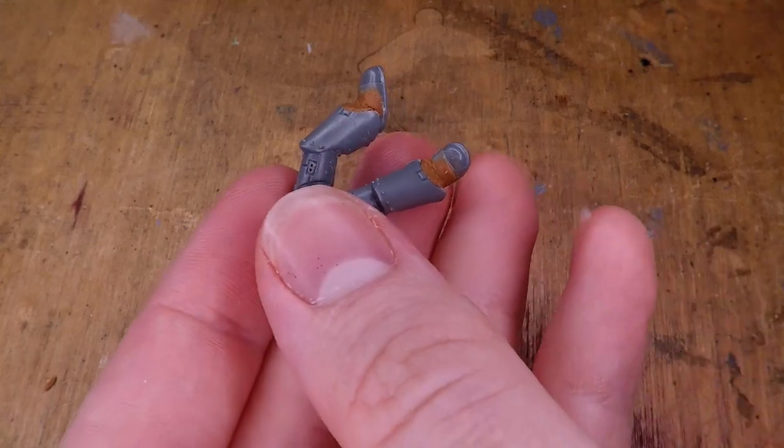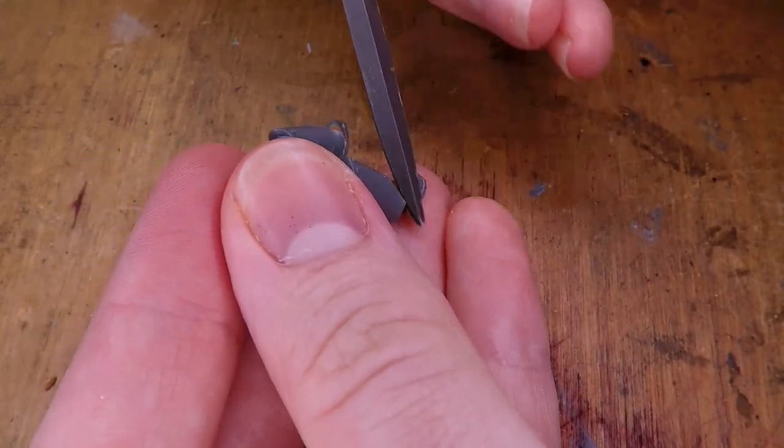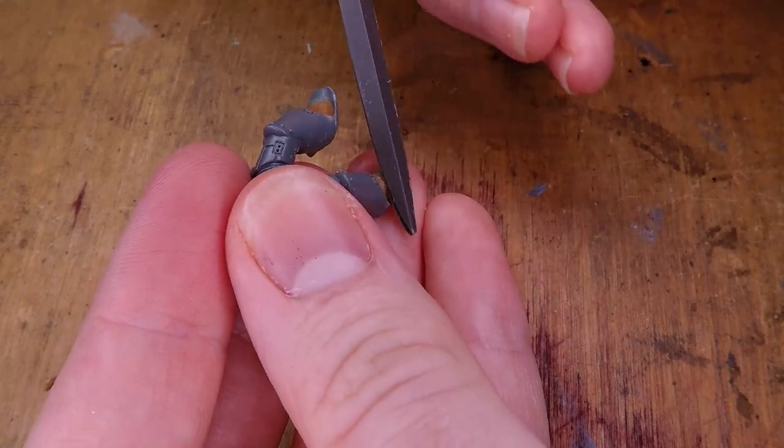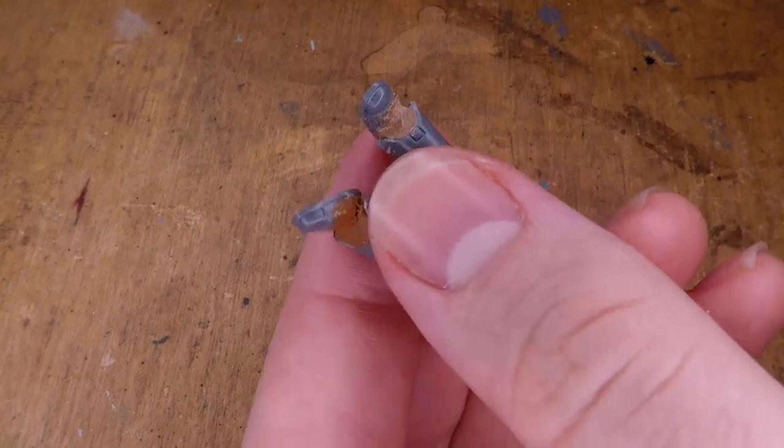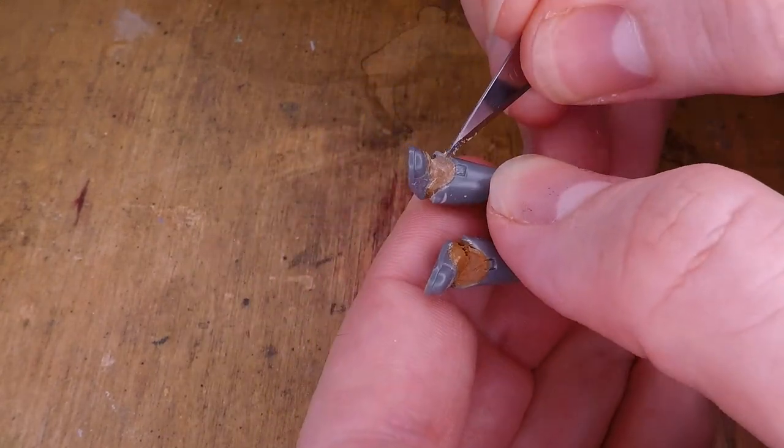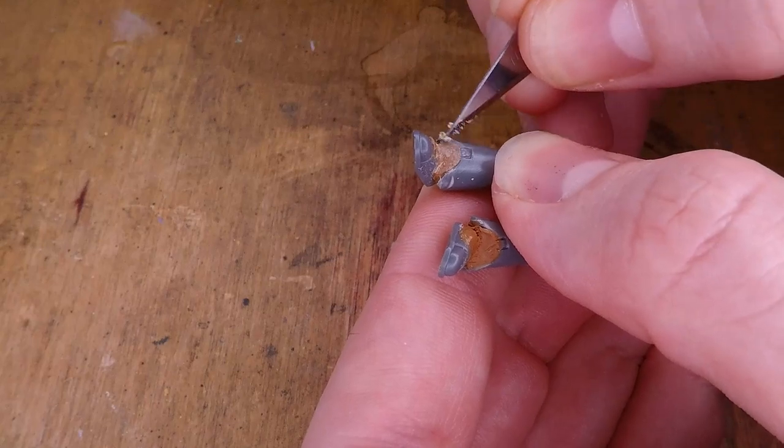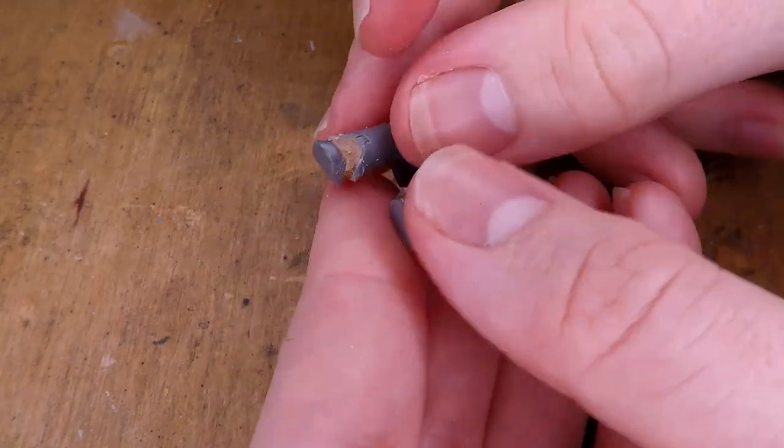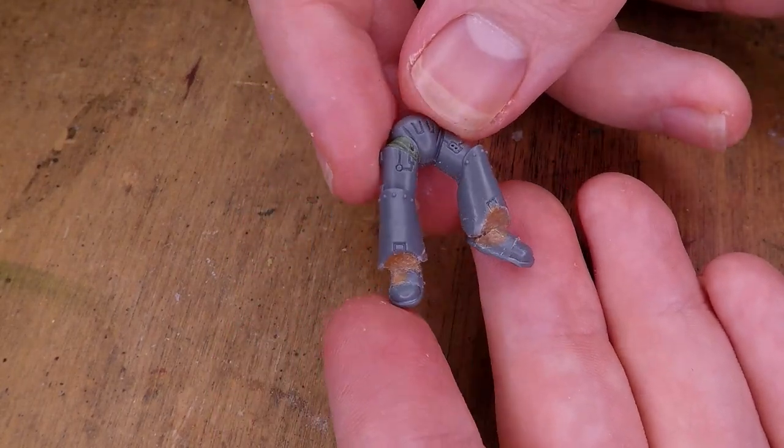But first I had to let the Milliput set, and while I did that, I started sanding down the legs of the second miniature, or more accurately the feet that I had attached using some Milliput. And here you can kind of see why I was using Milliput. This part right here needs to be seamless with the plastic of the rest of the leg. Here you can see what the finished legs look like.